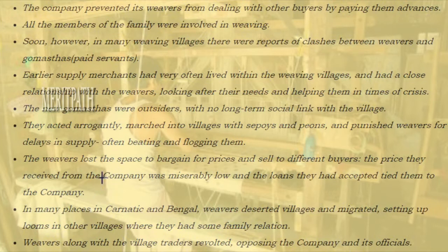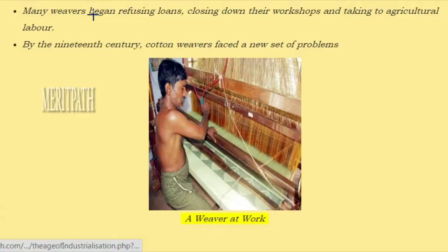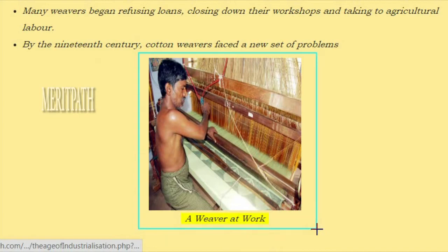In many places in Carnatic and Bengal, weavers deserted villages and migrated, setting up looms in other villages where they had some family relations. Weavers along with village traders resisted, opposing the company and its officials. Many weavers began refusing loans, closing down their workshops and taking to agricultural labour. By the 19th century, cotton weavers faced a new set of problems. Manchester comes to India: By the beginning of the 19th century, we see the beginning of a long decline of textile exports from India.